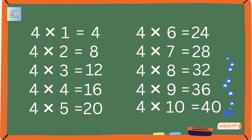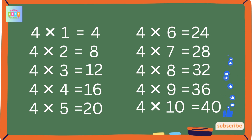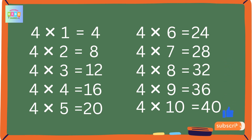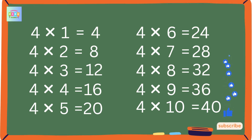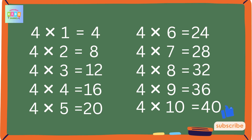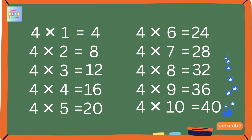4 1s are 4, 4 2s are 8, 4 3s are 12, 4 4s are 16, 4 5s are 20, 4 6s are 24, 4 7s are 28, 4 8s are 32, 4 9s are 36, 4 10s are 40.